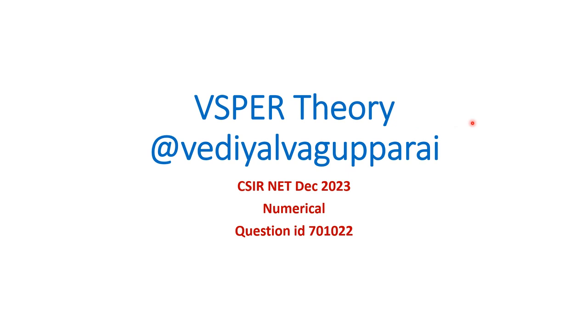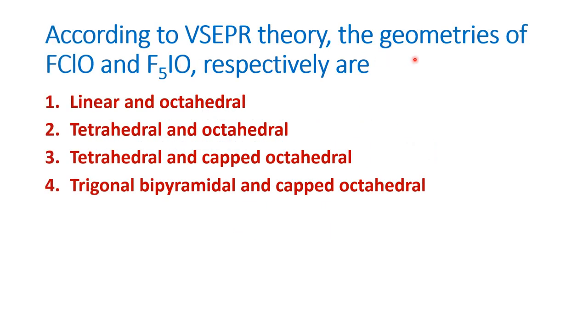It is a very interesting question and a very simple one. We will observe the question and then come to a solution. According to VSEPR theory, the geometries of FClO and F5IO respectively are. There are two compounds that are given and we are asked to find the geometries.